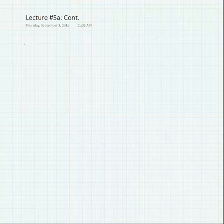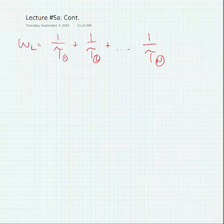Now, we're going to find multiple time constants for every big capacitor in the circuit. And this is going to be a little bit different than OCTC. Our omega L is going to be equal to the sum of one over the time constant for each of those big capacitors. Okay, so in the next set of lecture notes, we will look at an example.